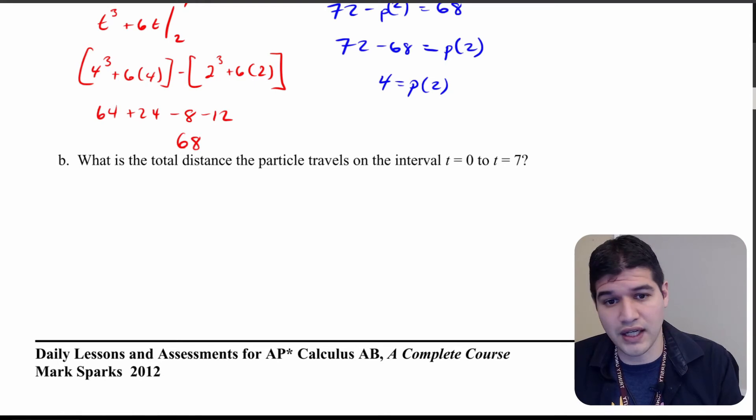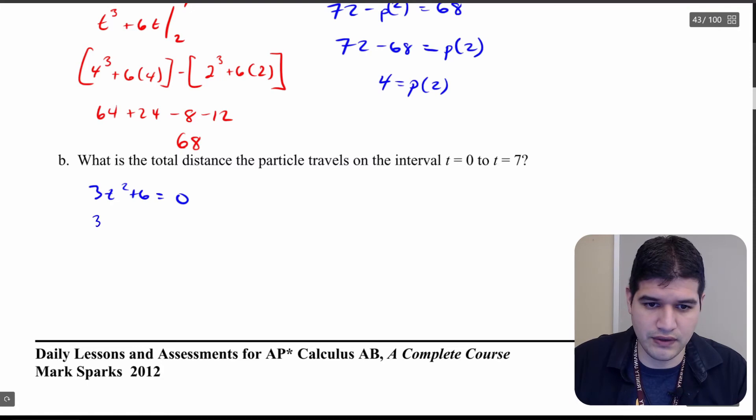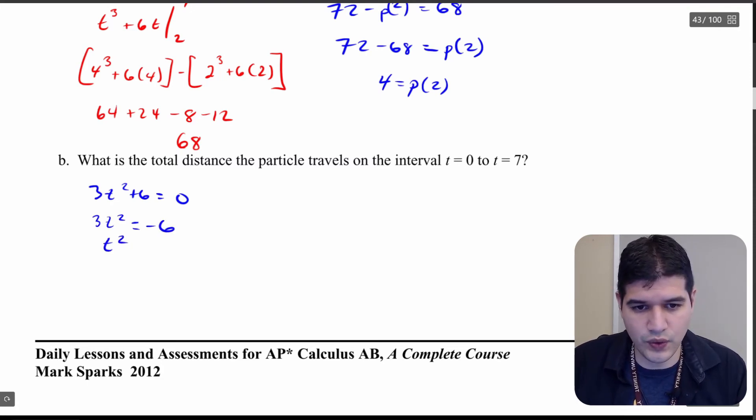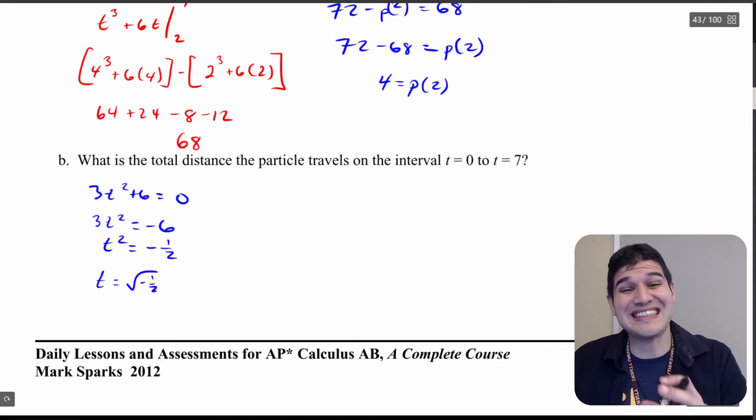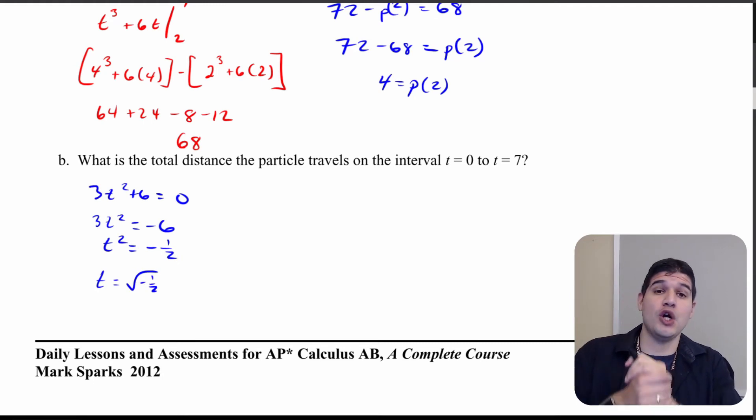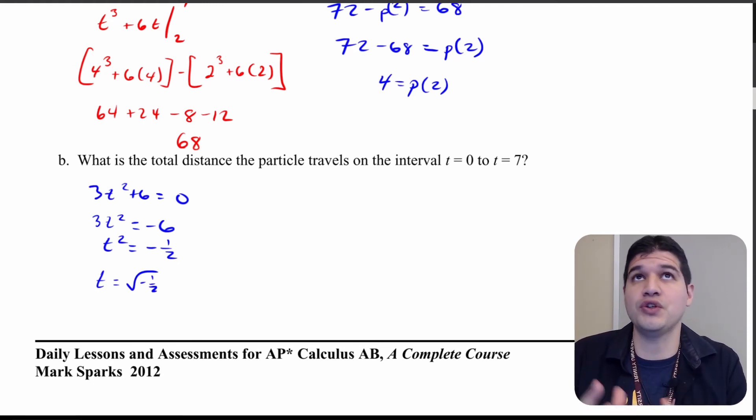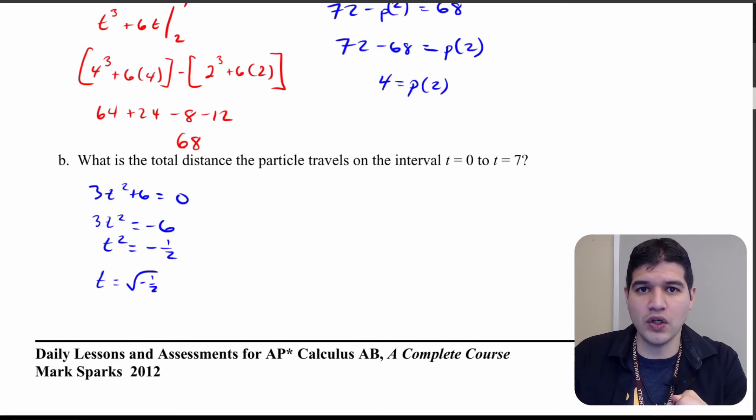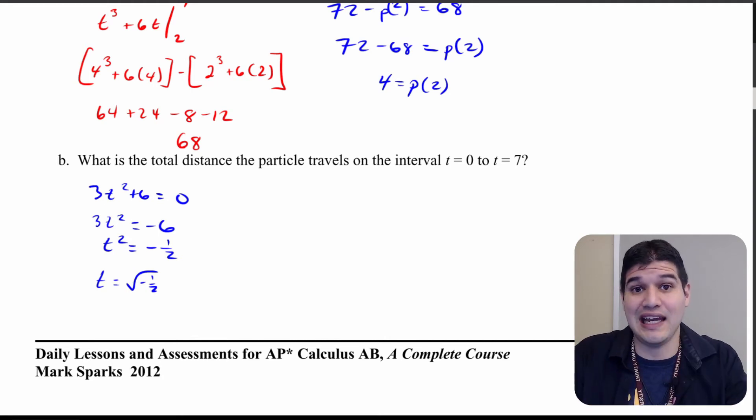So let's take our function for velocity 3t squared plus 6 and set that equal to 0. I'm going to get 3t squared equals negative 6. t squared equals negative 1/2 when I divide that by 3, and t is going to be the square root of negative 1/2 which is an imaginary number. So there is no change in direction for this particle on the interval from 0 to 7 or anywhere from 0 to infinity. It's always going in that same direction.